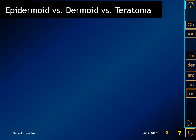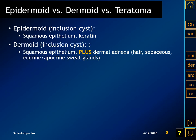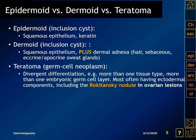Let's talk about the terminology of epidermoid, dermoid, and teratoma. An epidermoid is an inclusion cyst lined by squamous epithelium, and the contents are keratin — typically dry, waxy, flaky keratin. Dermoids are also more properly inclusion cysts. In addition to squamous epithelium, they have the dermal adnexa: hair follicles, sebaceous glands, and both eccrine and apocrine sweat glands.